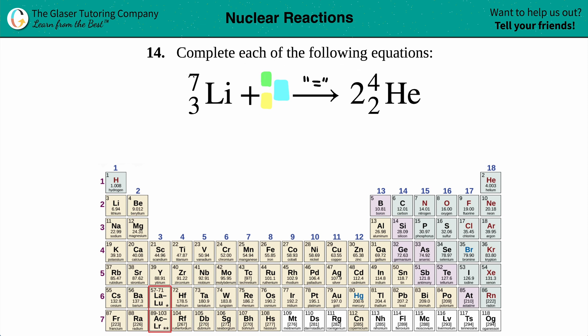So I have a seven for the lithium plus, literally it says plus, X, which we're trying to solve for that top number. And then on the other side, it equals to a top number of four. However, there's two heliums with a four on the top.